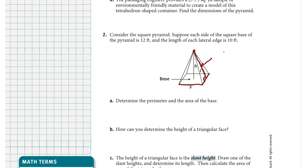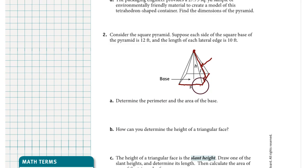That distance is given the letter L and it means slant height, or slant length — hence the letter L for the word length. It is a different type of height than what we use the letter H to represent, which is the height of the pyramid itself. As long as you know how long the bottom edges of the base are and how long the slant height is, you can find the surface area of a pyramid. If you don't know those numbers, then you need to use other geometry skills to find them.